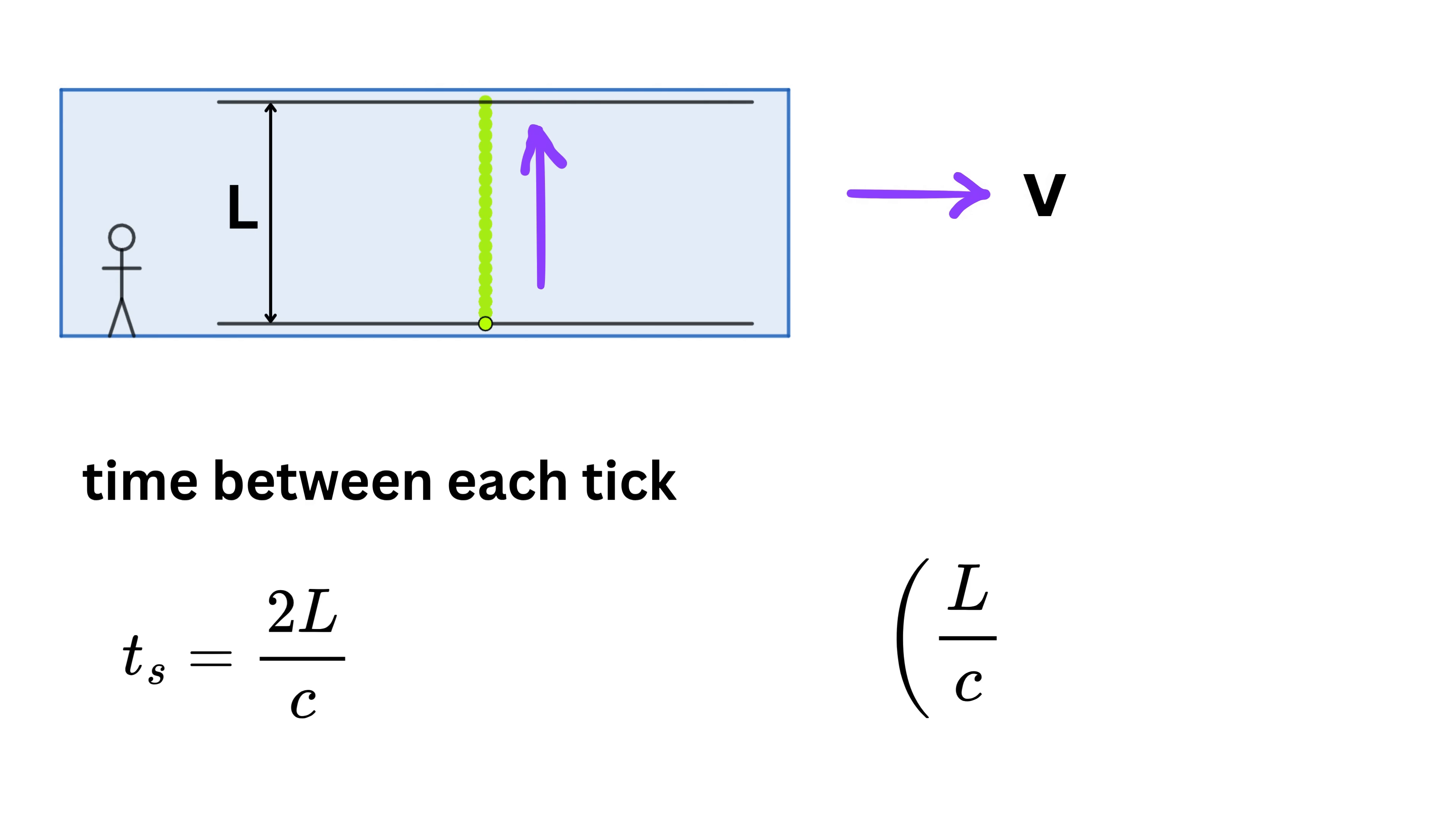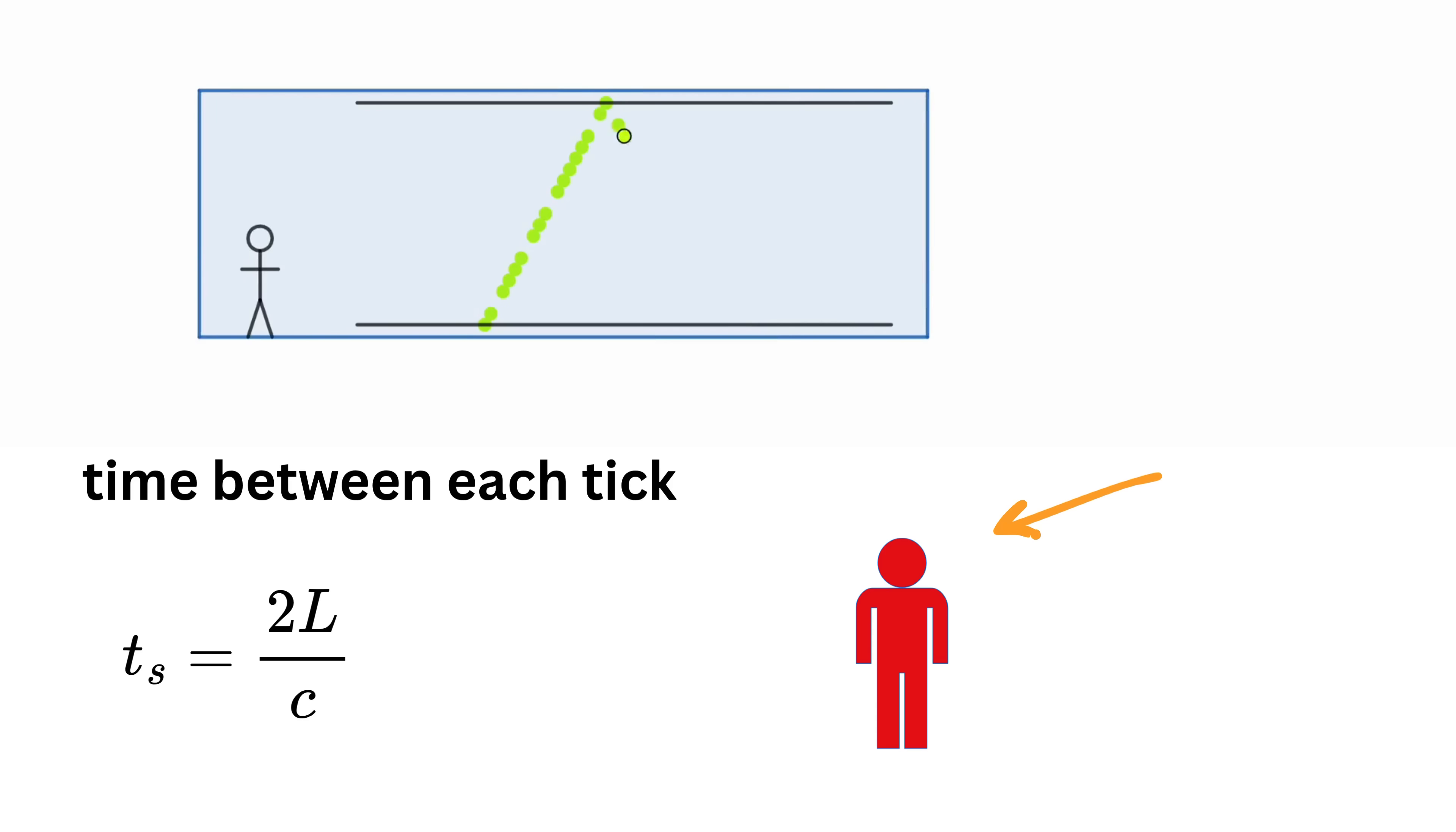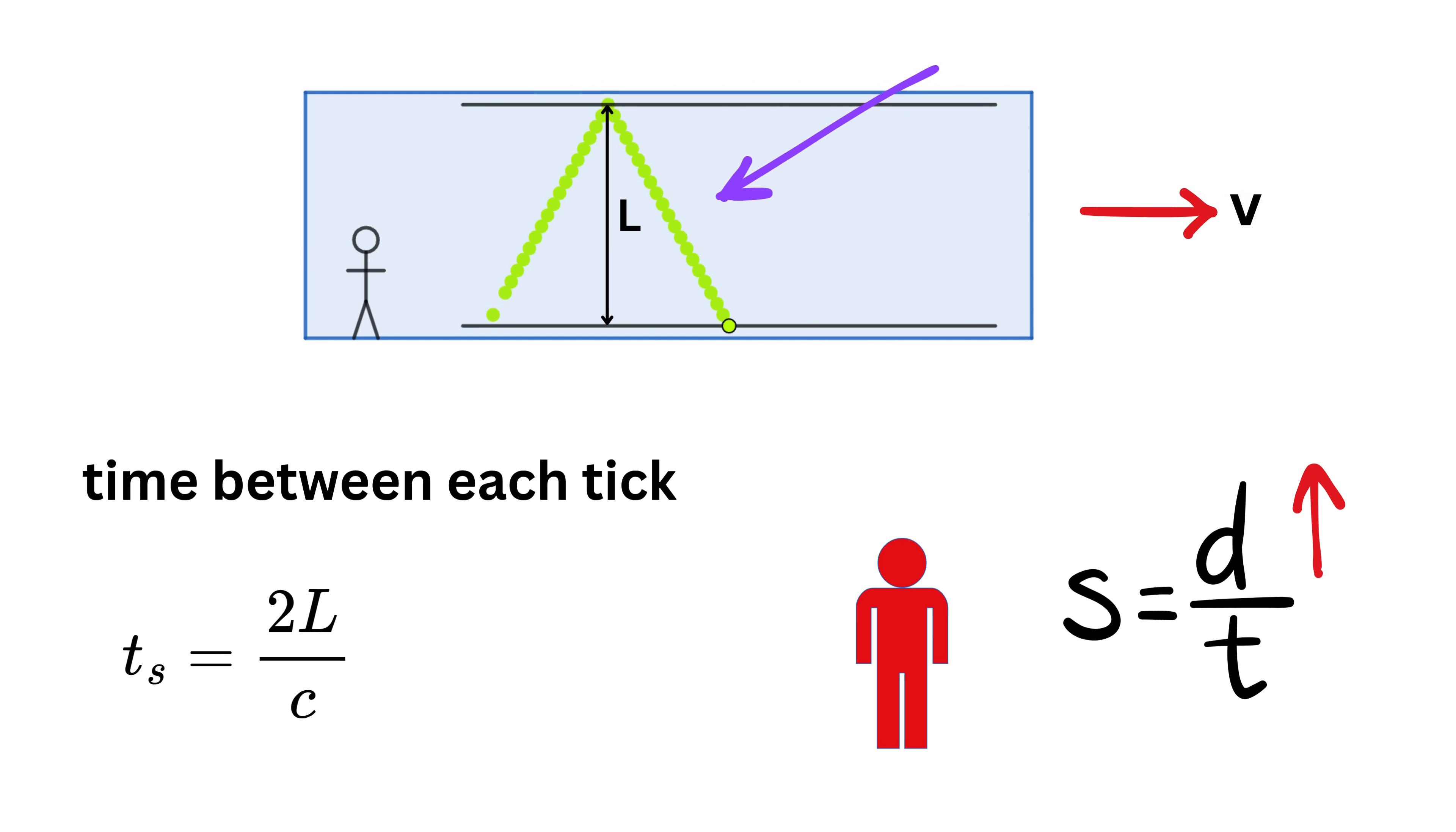But now imagine you are standing outside the spaceship watching it move past you very fast. From your point of view, the light is not just going up and down anymore. Because the spaceship is moving, the light is also moving sideways along with it. So from your point of view, the light is actually tracing a diagonal path. It goes up and forward, hits the top mirror, then comes down and forward again. It's like the light is making a kind of zigzag path. See this animation. But remember, and here comes Einstein's second postulate, the speed of light is the same for everyone, even for you standing outside. So if the light is taking a longer path, but it's still moving at the same speed, that means it must be taking more time to finish one tick of the clock.